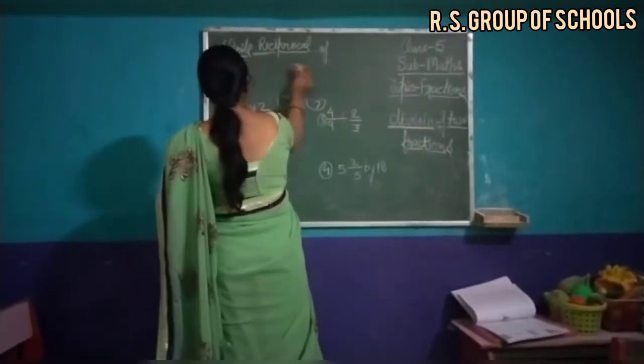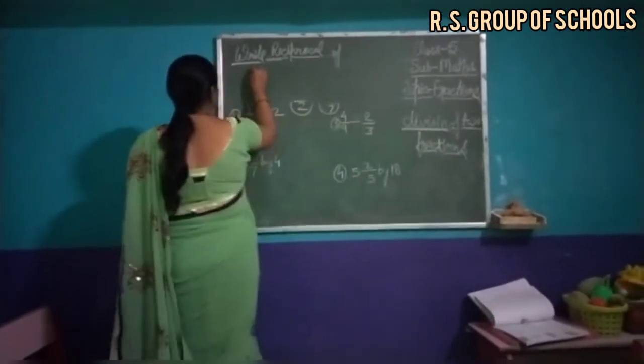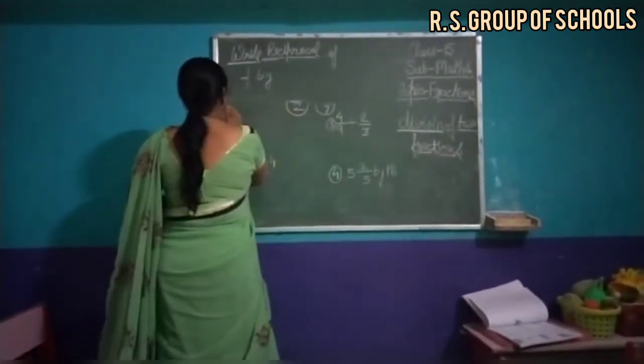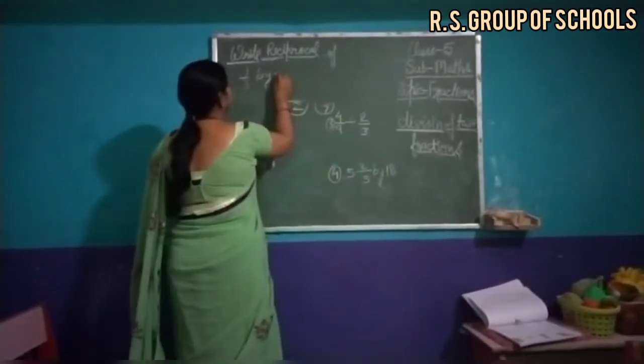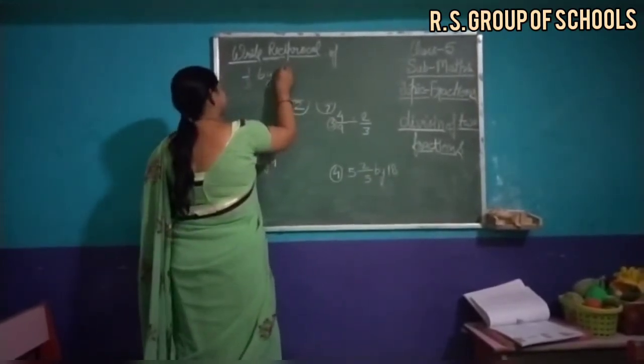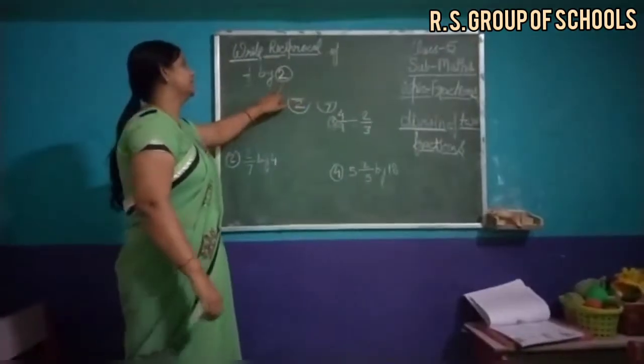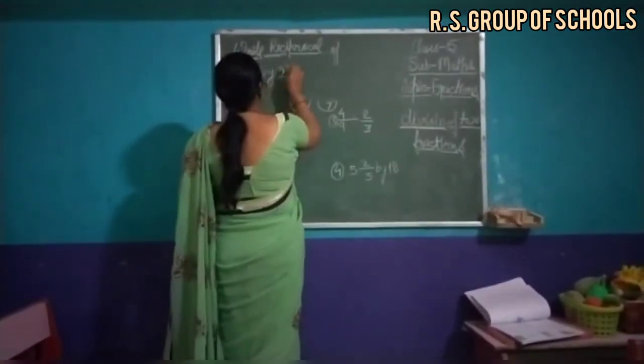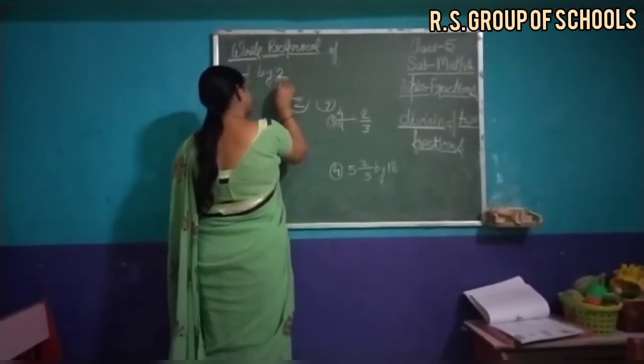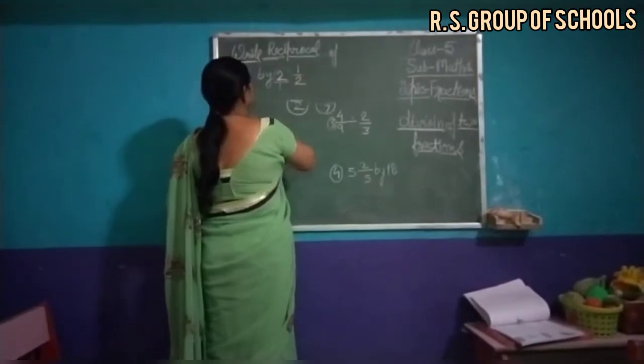Division करने के लिए, we reciprocal the digit. See, 1 upon 3 by 2, and one other thing, reciprocal always right hand side की digit का ही होगा. Only 2 is here, so when we reciprocal it, it becomes 1 upon 2.